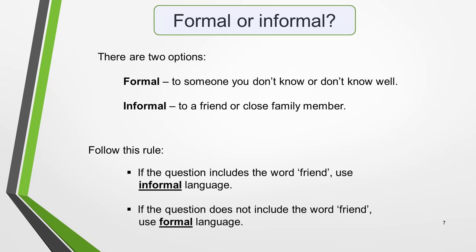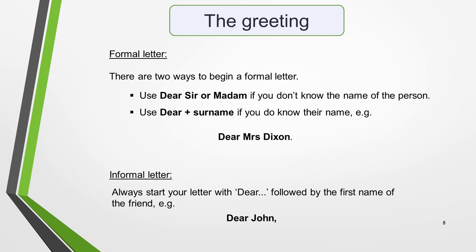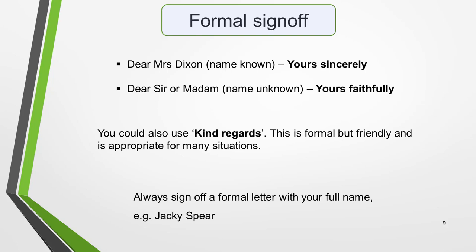This leads us on to the opening of the letter — the greeting. It's most likely that you would know the name of your neighbour, so make one up for them, for example, Mrs. Dixon. If you did not know their name, you would write 'Dear Sir' or 'Dear Madam'. If you were writing an informal letter to a friend, you would use their first name, such as 'Dear John'. The greeting will determine how you sign off your letter. For a formal letter, use 'Yours sincerely' if you started with 'Dear' and the surname, or 'Yours faithfully' if you started with 'Dear Sir or Madam'. You could also use 'Kind regards' — this is formal but friendly and particularly useful if you struggle to spell sincerely and faithfully.